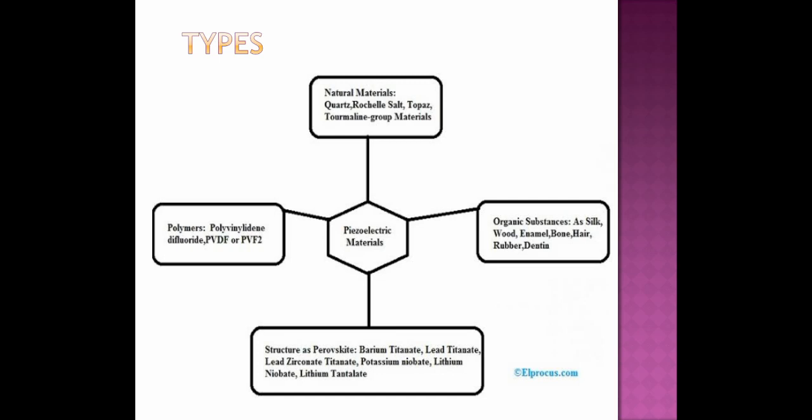There are some types of Piezoelectric materials. The natural Piezoelectric materials are quartz, rochelle salt, topaz, etc. The polymer Piezoelectric materials are PVDF or PVF2. And the organic substance Piezoelectric materials are silk, wood, enamel, bone, air, rubber, etc.